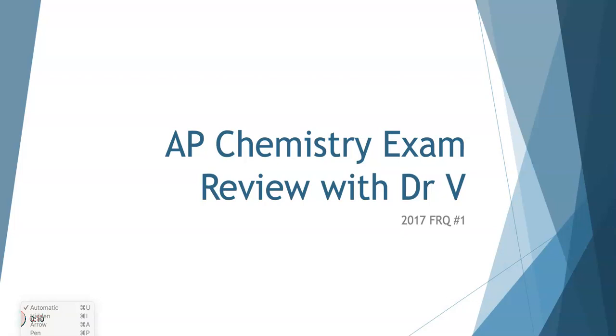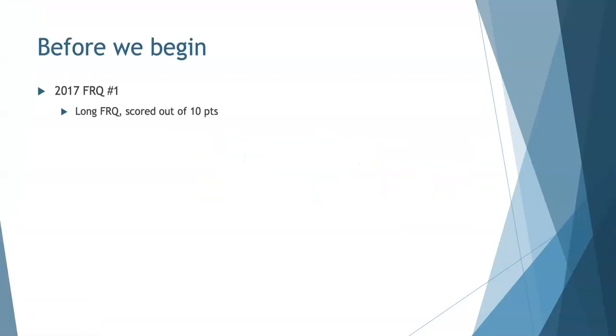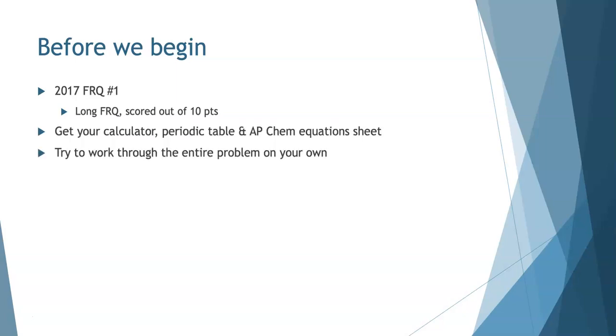We're going to work today on free response question number one from the 2017 release exam. This was a long free response question scored out of 10 points. I recommend that you try to work through the entire problem on your own. To do that, you'll need your calculator, a periodic table, and your formula sheet. Try to do the problems first before listening to my solution. That's what helps you develop as a chemistry student, and you can keep track of your score as you go.